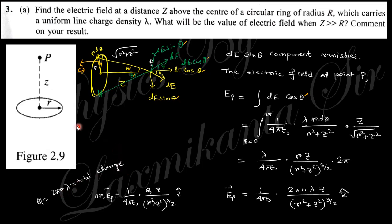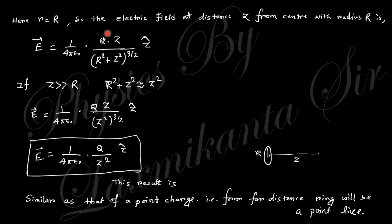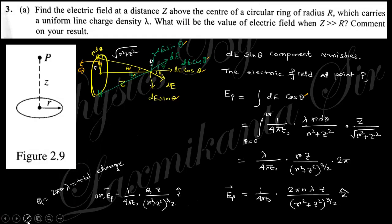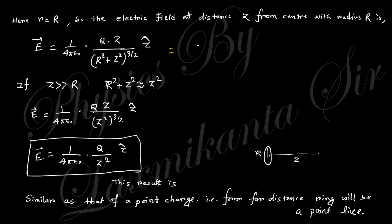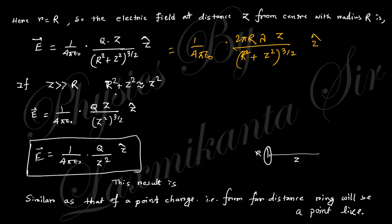Since 2πR lambda equals total charge Q, the electric field can be written as E equals (1 over 4π epsilon naught) times (Q z) over (R² + z²)^(3/2), or in terms of lambda: E equals (1 over 4π epsilon naught) times (2π R lambda z) over (R² + z²)^(3/2). When z is much greater than R, the denominator becomes approximately z², giving E proportional to 1 over z².